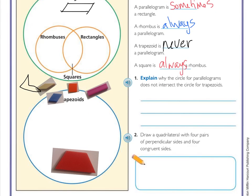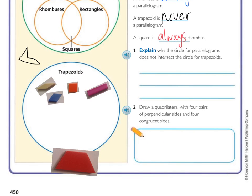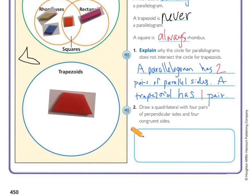Looking at number one and two: explain why the circle for parallelograms does not intersect with the circle for trapezoids. A parallelogram has two pairs of parallel sides, while a trapezoid has only one pair — that's why they have nothing more in common than just four sides. Number two: draw a quadrilateral with four pairs of perpendicular sides and four congruent sides. Your quadrilateral should end up being a square.